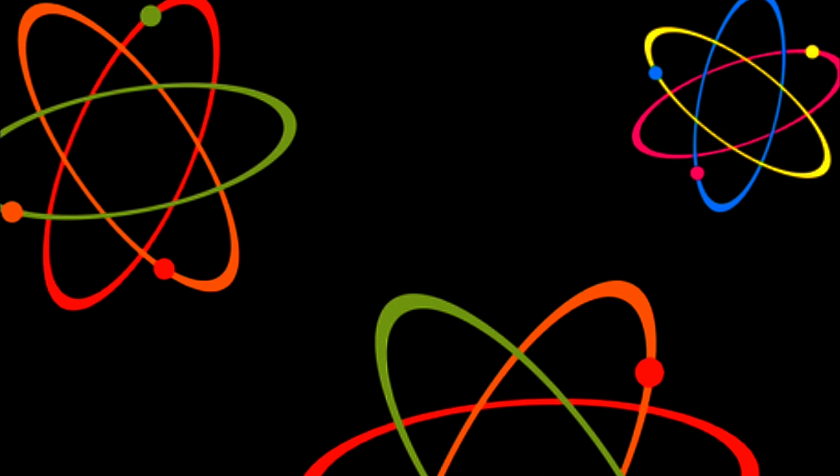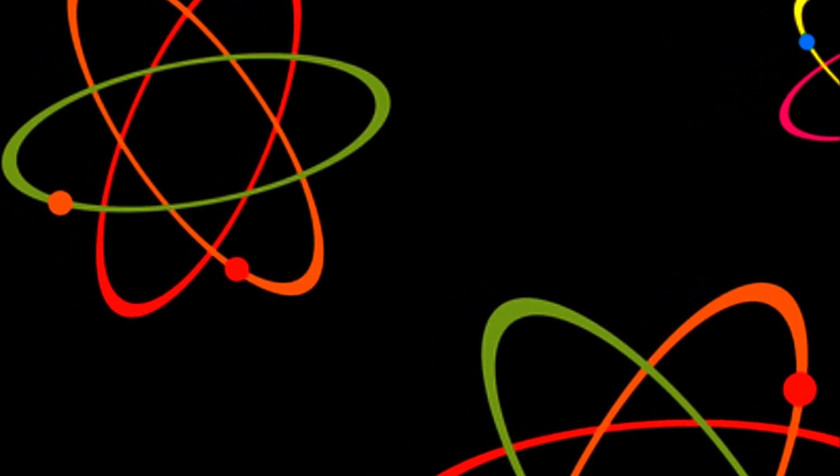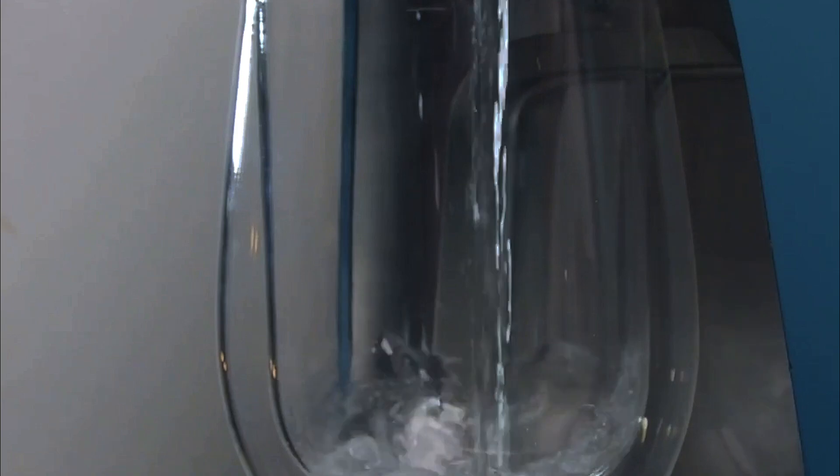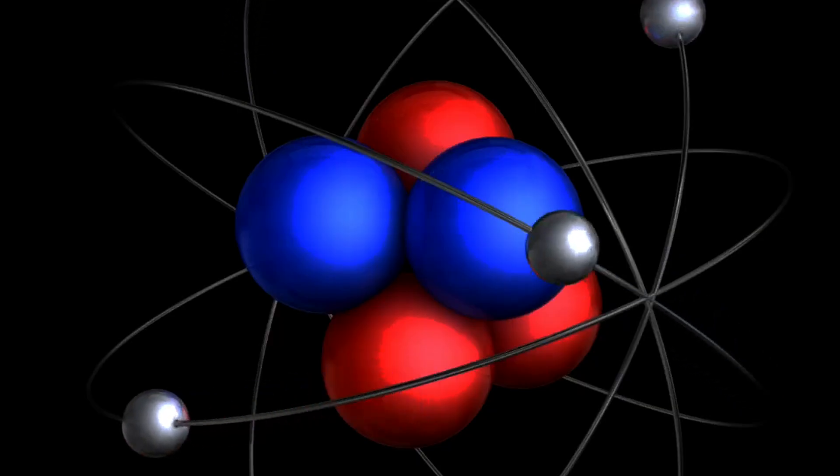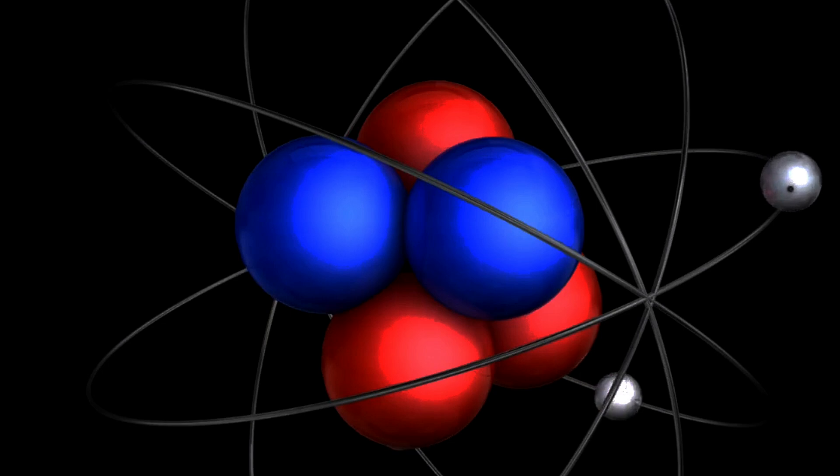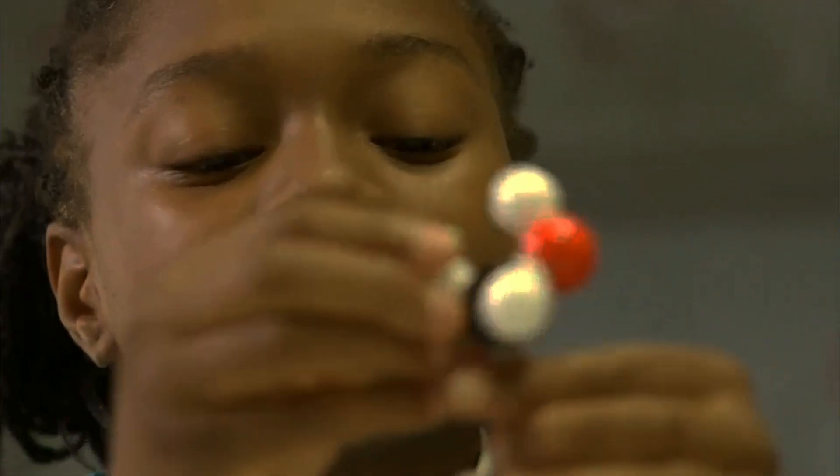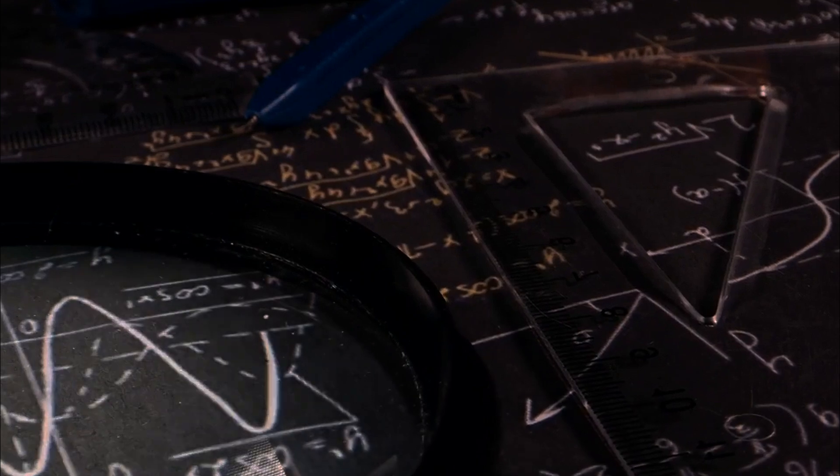Atoms have multiple orbitals, each with a specific energy level. Electrons fill these orbitals in a specific order, starting with the lowest energy levels. This is similar to how water fills a container from the bottom up. As more electrons are added to an atom, they occupy higher and higher energy orbitals. These orbitals extend further away from the nucleus.